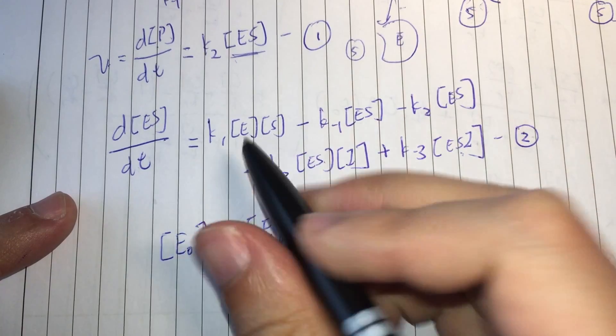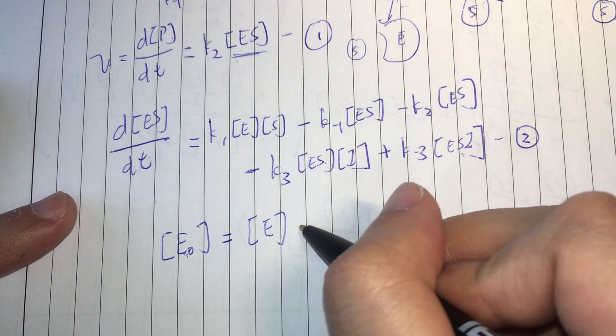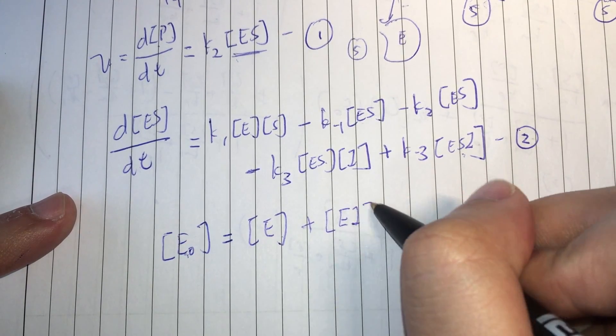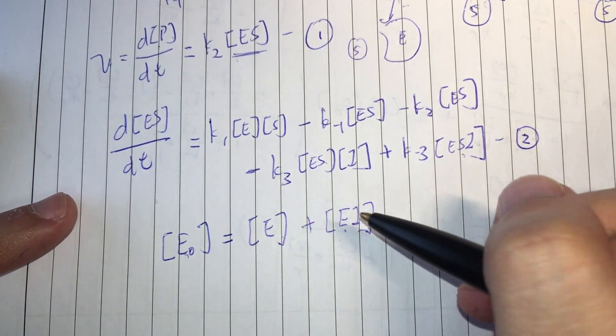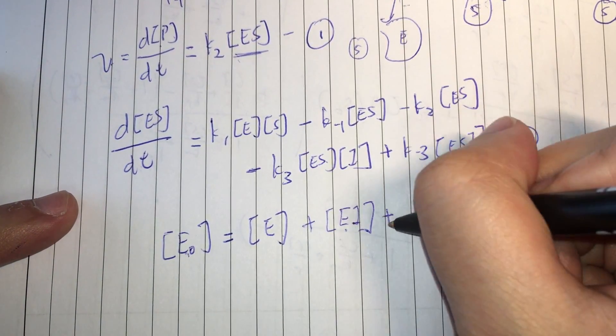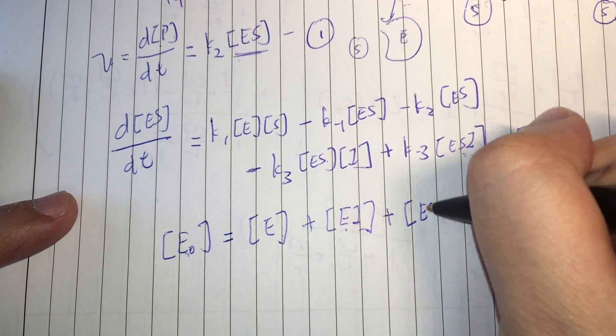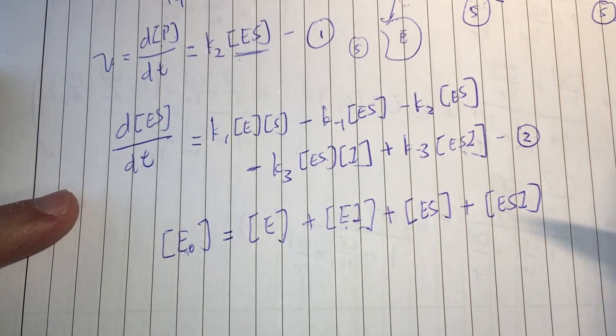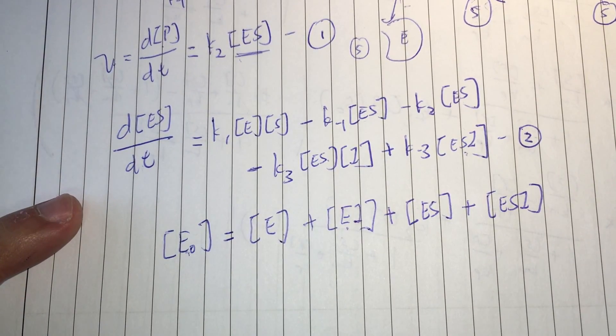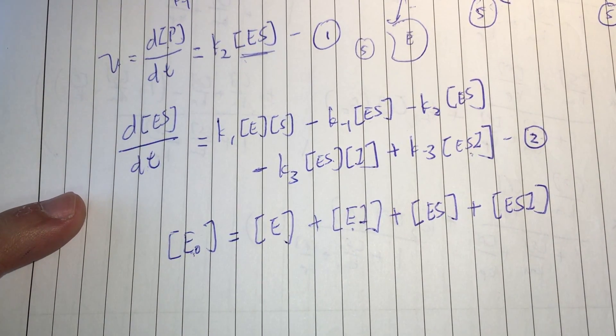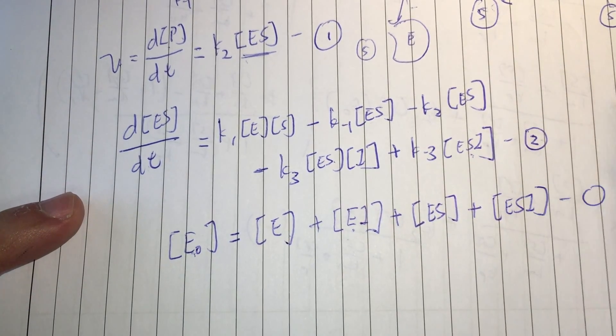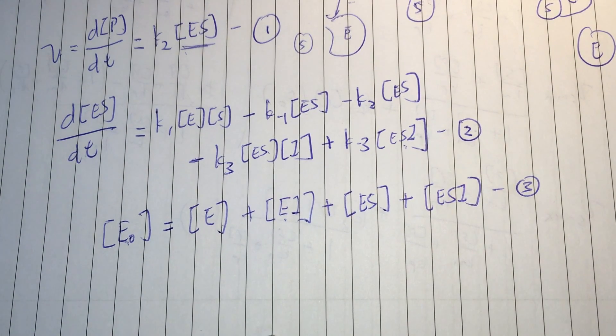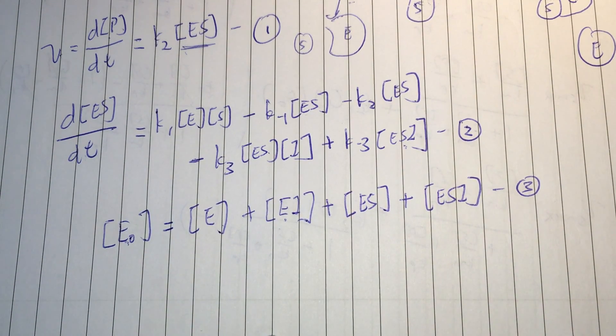So, let's do this. So, E naught equals to E, which is the free enzyme concentration, the enzyme inhibitor concentration, enzyme substrate concentration, plus ESI, which is the enzyme substrate and inhibitor concentration. So, that is four species we are interested in. And, to simplify things again, we want to consider the rapid equilibrium assumption.